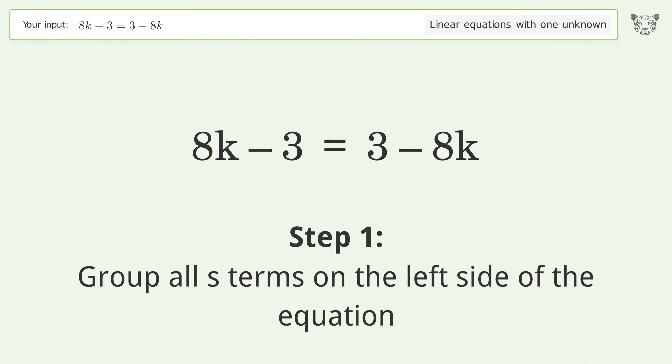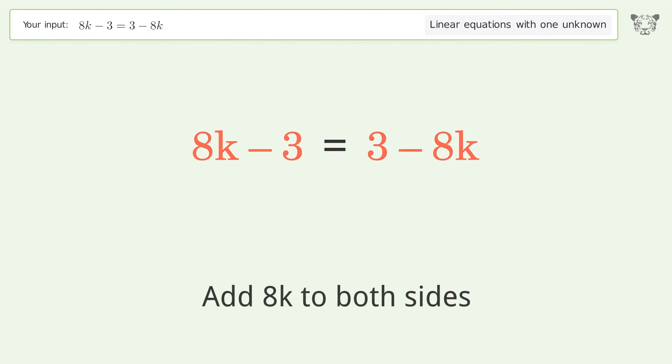Group all k terms on the left side of the equation. Add 8k to both sides.